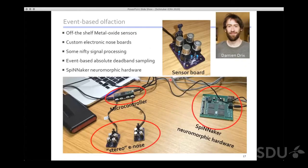We tried something much simpler first: event-based olfaction. This is work led by Damien Driggs in my group. Damien built a sensor board using much higher dynamic range, by doing tricks for the arrangement of processing electronics and sensors, and using higher bandwidth ADC and nifty signal processing. We applied event-based absolute deadband sampling, turning a signal into a series of events by repeated threshold crossing. We also employed SpiNNaker neuromorphic hardware for computation. We have a stereo e-nose with two sensor boards hooked up to a Teensy microcontroller.